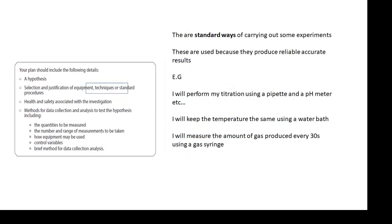Standard ways. There are standard ways of doing some experiments. And they are standard because we know that they're going to produce reliable and accurate results. For example, I'll do my titration using a pipette and a pH meter. I will keep using a water bath. I will measure the amount of gas produced every 30 seconds using a gas syringe. These are standard techniques, standard ways of doing it. And because they are reliable and they are accurate, this is what scientists use.